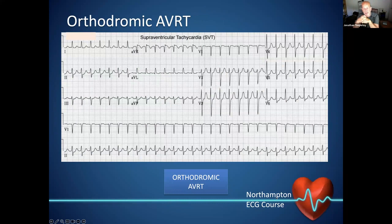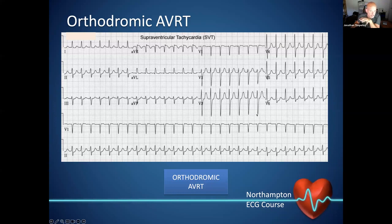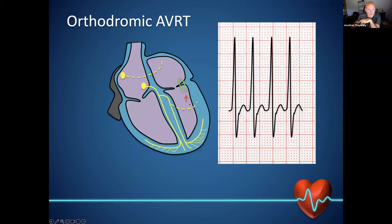When you go into an SVT with an accessory pathway, 90% will go into what's called orthodromic — going down the orthodox route through the AV node, but then back up the accessory pathway. Because you're now going up the accessory pathway and no longer using it in the antegrade fashion, you have no delta wave. As soon as you go into the SVT, the delta wave completely disappears. We have a narrow complex at around 170 beats per minute with no visible P wave, as that would be inside the QRS. The route goes up the accessory pathway, back into the right atrium, down the AV node, and across to the left ventricle — that's why the delta wave completely disappears.